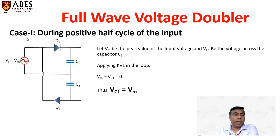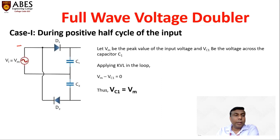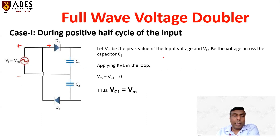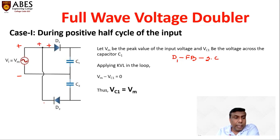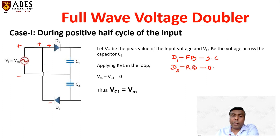Let's start with case number 1, which corresponds to the positive half cycle. During the positive half cycle, the top terminal is plus and the bottom is minus. We check which diode is forward biased and which is reverse biased. The positive terminal of input is connected to the positive terminal of diode D1; therefore, D1 will be forward biased and will behave like a short circuit. The plus sign is connected to the negative terminal of diode D2; therefore, D2 will be reverse biased and will behave like an open circuit.